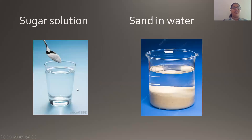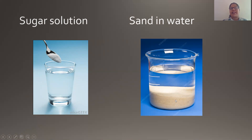Now over here we have taken two solutions. The first one is our sugar solution and the second is sand in water. When we add salt or sugar to water, the salt or sugar gets completely mixed up in water and we cannot tell whether it was added or not. Whereas when we add sand to water, the sand particles settle down at the bottom of the glass or beaker — those are our insoluble substances. When we add a drop of oil also, the oil does not get dissolved in water, so it is also an insoluble substance.